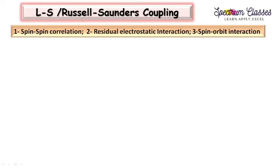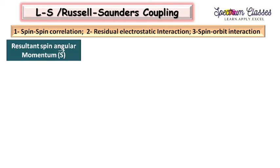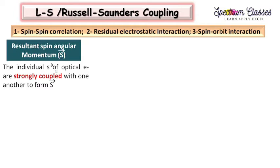Now coming to the L-S coupling. This suggests three important points: first, spin-spin correlation; second, residual electrostatic interaction; and third, spin-orbit interaction. We are going to discuss all three points one by one. First is the resultant spin angular momentum vector S. Here you can see the individual vector S - the spin angular momentum of the optical electron, which is the electron for which we are writing the term symbol. These are strongly coupled with one another to form vector S, the resultant spin angular momentum from spin-spin correlation.